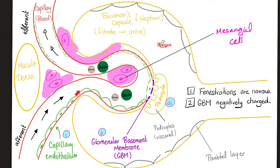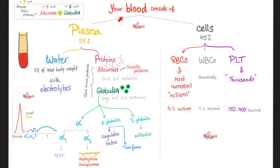Normally, proteins in your blood should not end up in your urine for two reasons. Number one, your basement membrane's fenestrations or holes are too narrow and the proteins are bigger than the holes, so they cannot pass under normal circumstances. Number two, your glomerular basement membrane is negatively charged and the proteins are also negatively charged, so they repel each other. Your plasma proteins are albumin and globulin — neither should appear in urine. If a tiny amount of albumin is sneaking by, it's called microalbuminuria. If a tiny amount of globulin is sneaking by, it's called microglobulinuria.